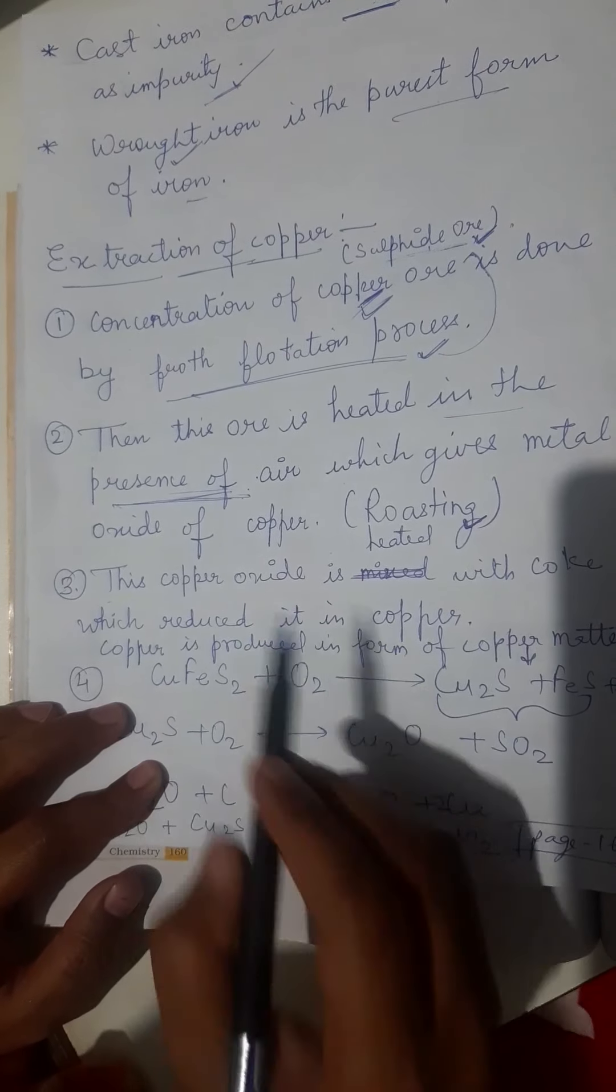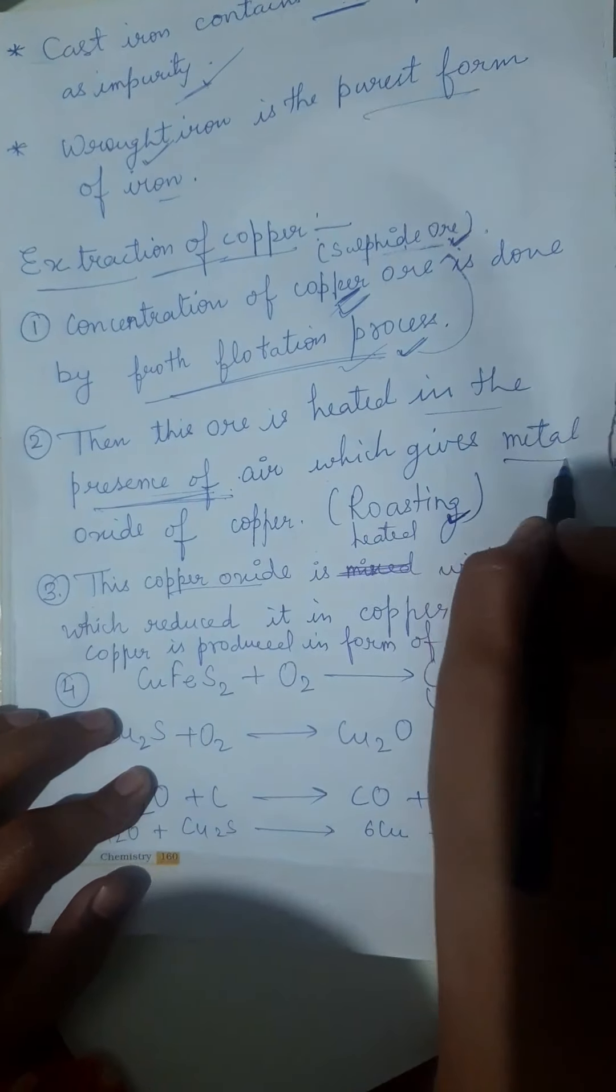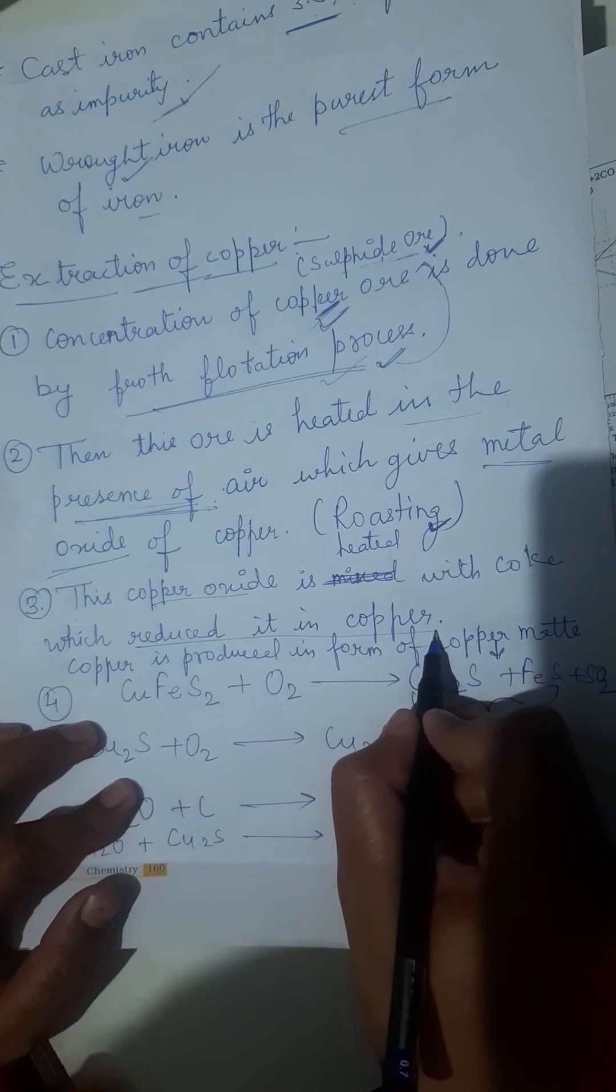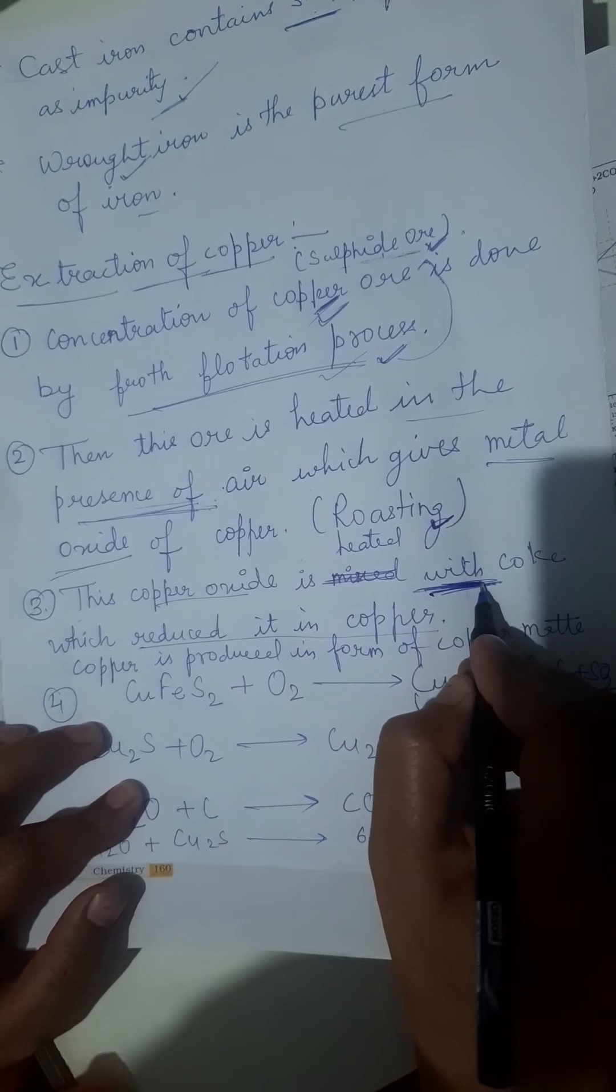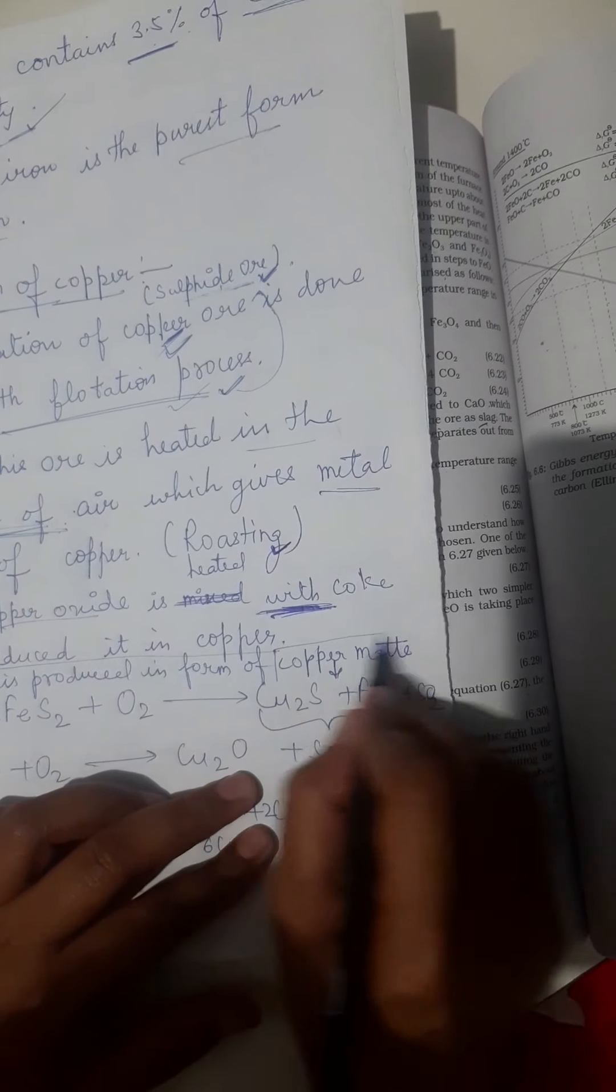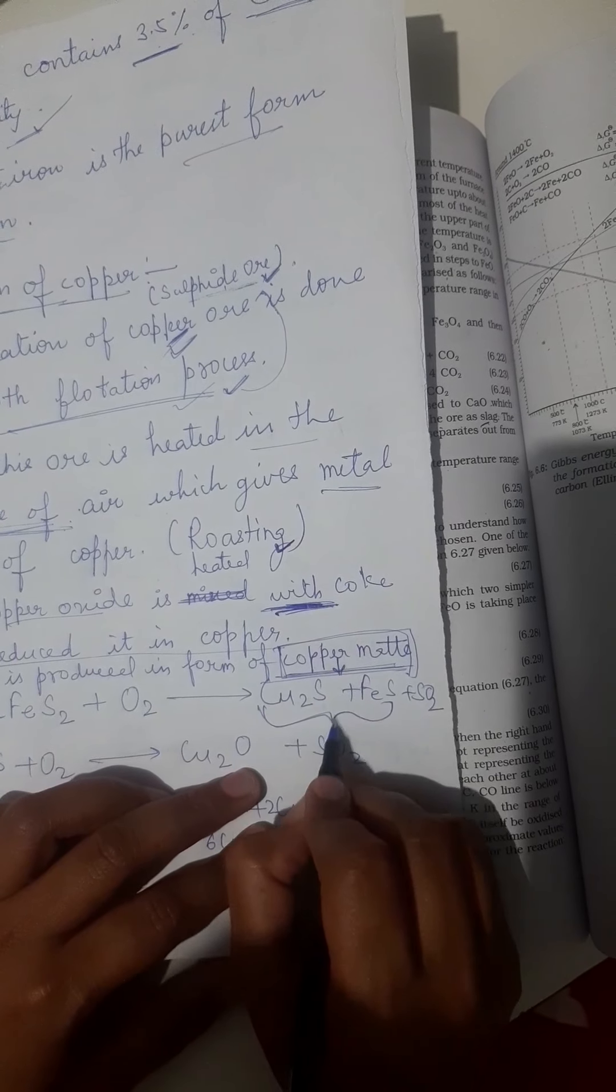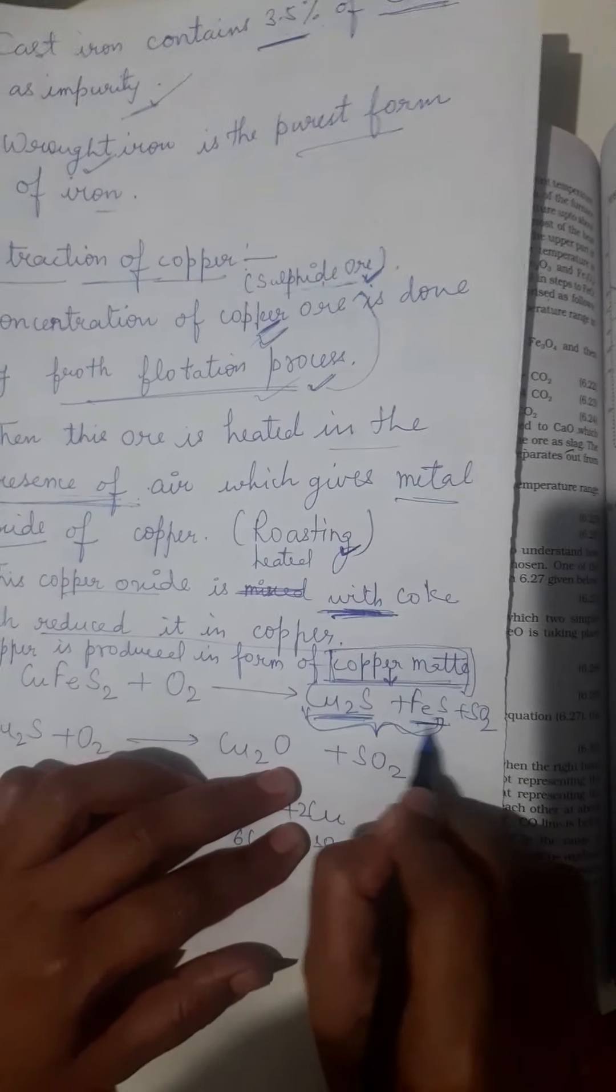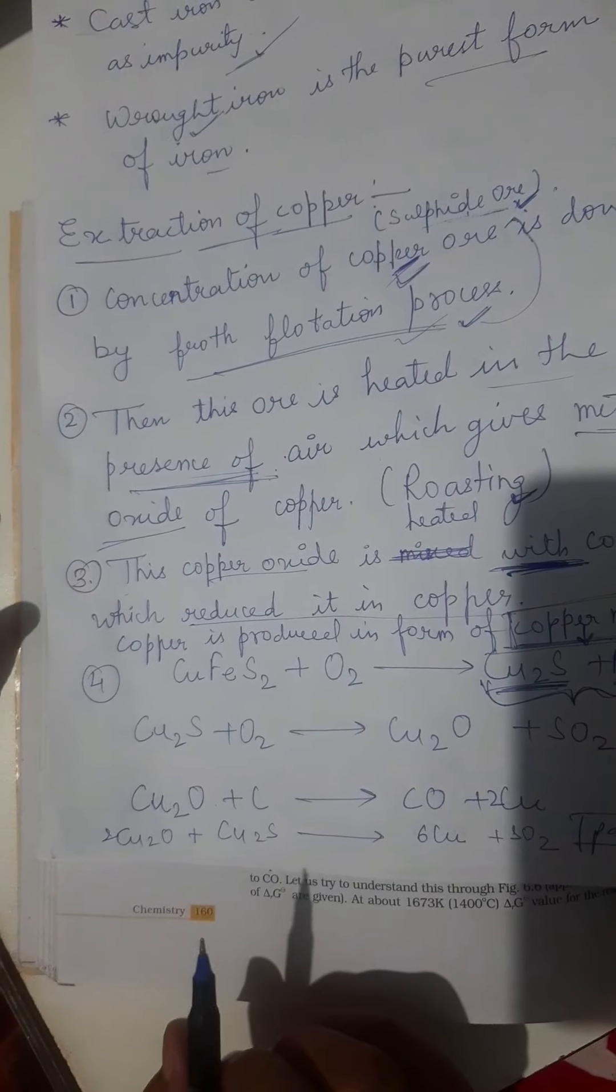This copper oxide is heated with coal which reduces it to copper. After concentration, we got the metal oxide. Now this metal oxide is reduced to copper with heating in the presence of coal. Copper is produced in the form of copper matte. The copper which forms is a combination of Cu2S and FeS. These two together are called copper matte.